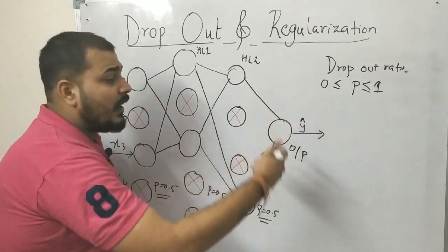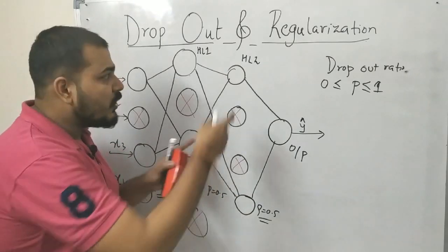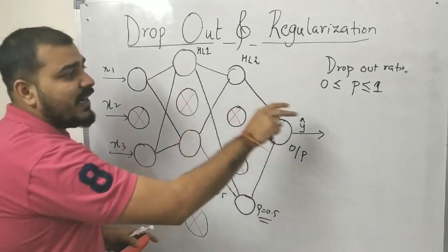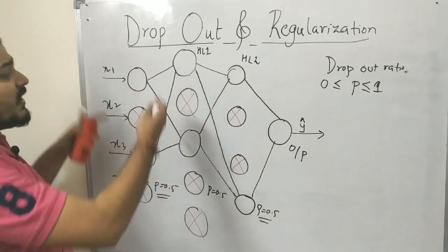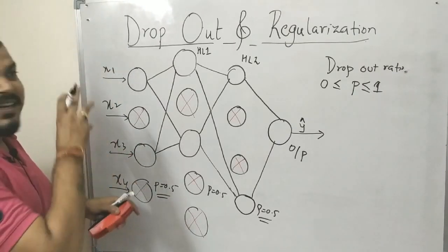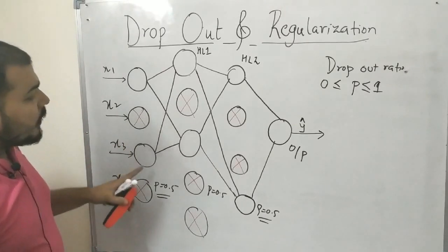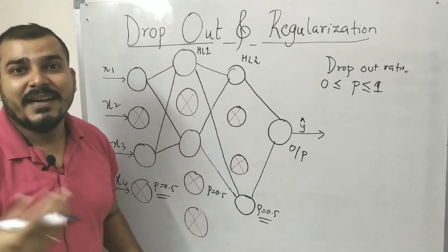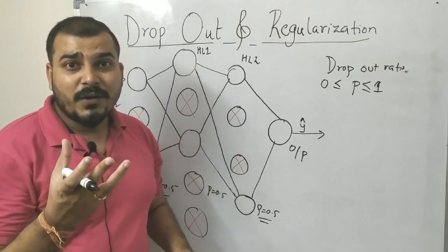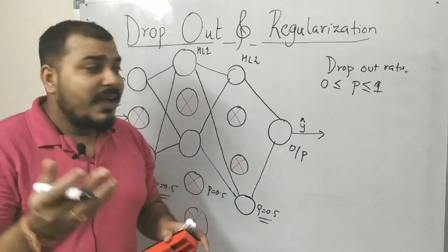In backward propagation, whichever neurons are activated will have their weights updated. In the next iteration, again based on P = 0.5, a different random subset of nodes is deactivated in the input features and all subsequent layers. Every time, with respect to this probability value, features get selected randomly — and that is the core idea behind the dropout layer, which is similar to random forest's subset selection.